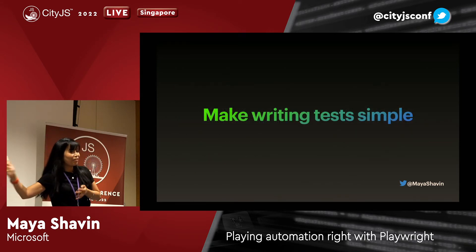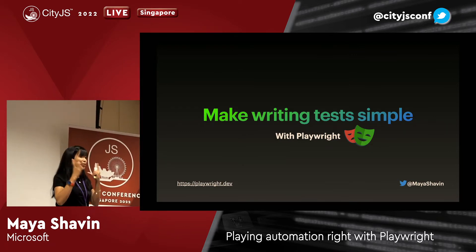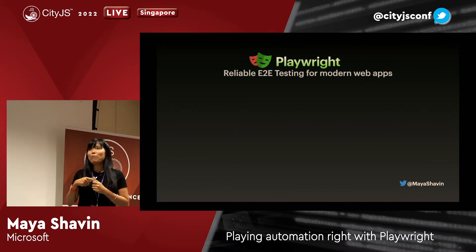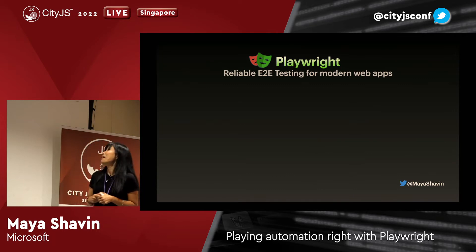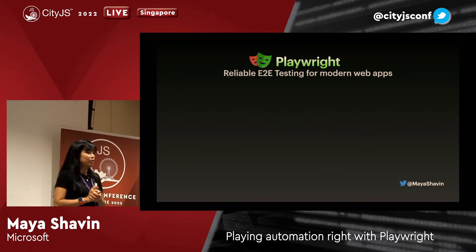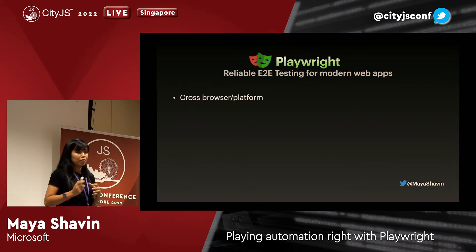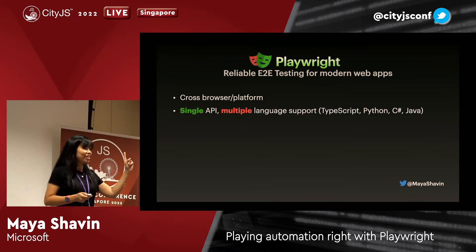The main course for today: making writing tests simple. How? Using Playwright. Playwright is a reliable end-to-end testing framework for modern web apps — I'd say it's a very good, very fast test runner. It has cross-browser support out of the box, including Safari, and it's free, unlike Cypress. It provides a single API but supports multiple languages: TypeScript, Python, C#, Java — so you can use it in one place for testing across all your projects.